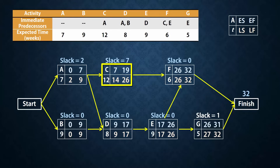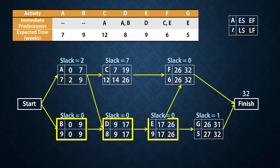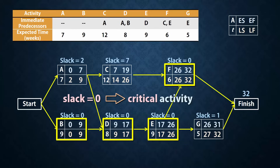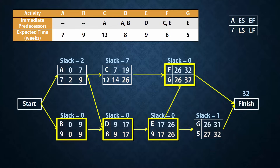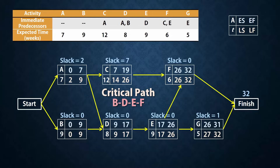Note, for example, that activity C can begin any time between week 7 and 14, and it can finish any time between 19 and 26. Thus, C can be delayed for up to 7 weeks and the project will still be completed in week 32. Activities B, D, E, and F, on the other hand, cannot be delayed at all without extending the project completion time. So if D is delayed by 2 weeks, then the project completion time will be extended by 2 weeks as well, from 32 to 34. The activities with 0 slack are called critical activities, and they form the critical path, which is the longest path in the network. So the critical path here is B, D, E, F. Thanks for watching.